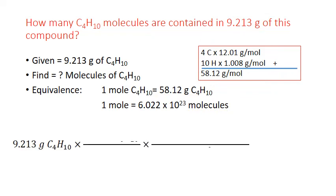Okay, now we set up our conversion, starting with our given number, 9.213 grams. We want to cancel out grams. So we're going to use the first equivalence for the first conversion factor. And we're going to put the gram term on the bottom, 58.12 grams. And the mole term on top, our grams are going to cancel out.